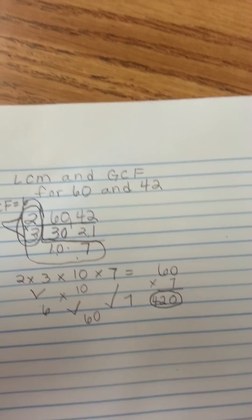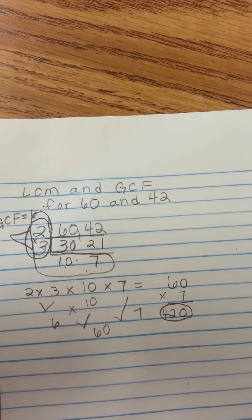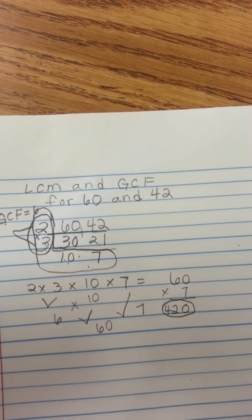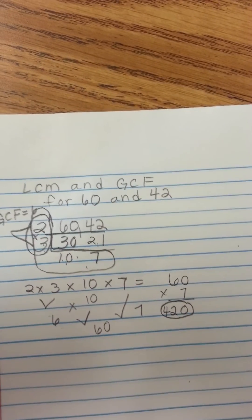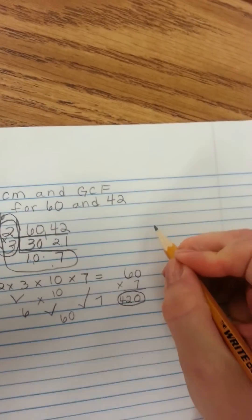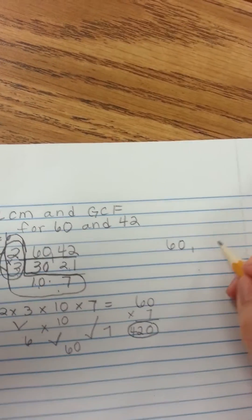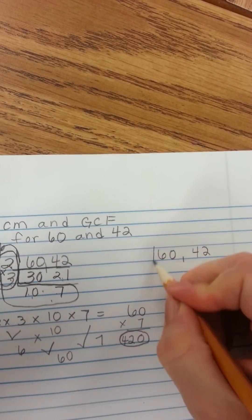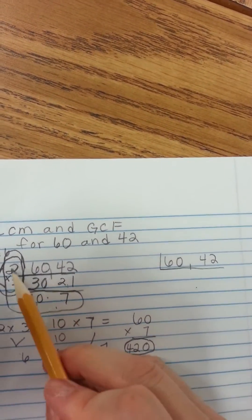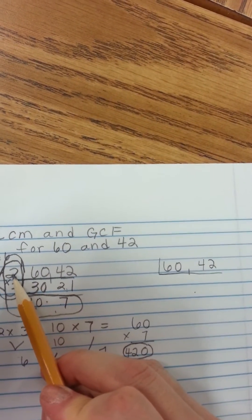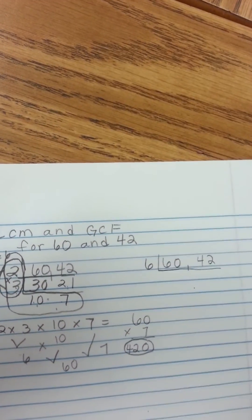Now, somebody might say, wait a minute, instead of taking out a 2, I took out a 6. And actually, that works too. Let's see what would have happened if I had done that. 60 and 42. Instead of taking out 2 like we did before, I know that 6 will go into both of these numbers.